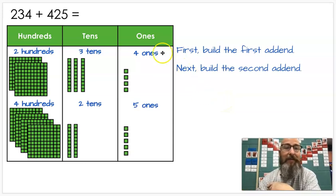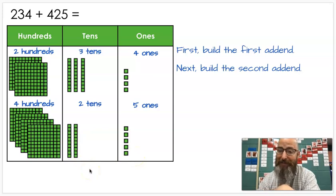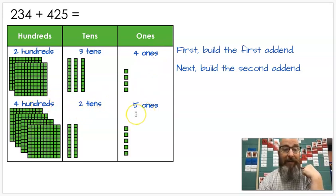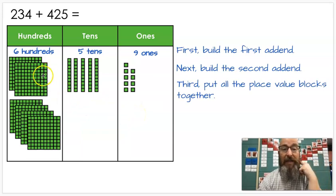What's the next step? Build the second addend. So we had 425, so I'm going to have four hundreds, two tens for 20, five ones for five. Do you remember what to do next? Push them all together. Now you can look here, and let's see if we're correct. We have two hundreds and four hundreds, so that should give us six, right? Three tens and two tens should give us five tens. Four ones and five ones should give us nine ones. So let's see if I have six, five, and nine, and I do six hundreds, five tens, nine ones.